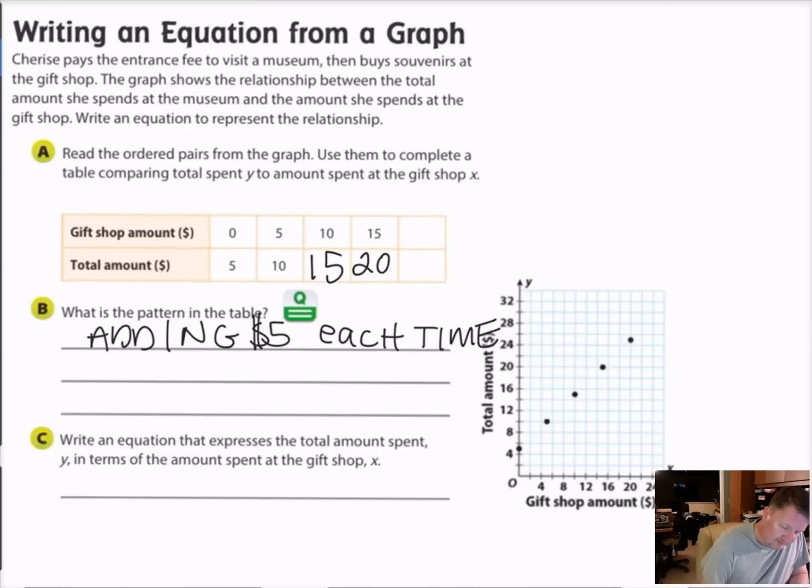So the pattern of the table is that I'm adding $5 each time. Or I can say for every amount that she spends at the gift shop, she adds $5 to it because that's the total cost that she spent to get in. So it really doesn't matter what the values are. If we add 5 to the amount spent of the gift shop, that will give me my total amount spent. So it says write an equation. It represents the total amount spent, Y, in terms of the amount spent at the gift shop. So if the total amount is Y, then we take the amount spent at the gift shop, and we add 5 to it, and that gives us our total spent for the day.